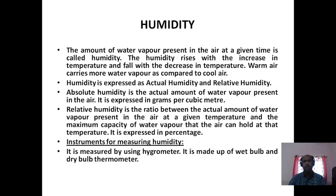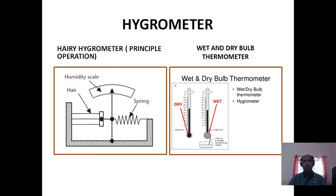Relative humidity is the ratio between the actual amount of water vapor present in the air at a given temperature and the maximum capacity of water vapor that the air can hold at that temperature. It is expressed as a percentage. There are two kinds of instruments used for measuring humidity: the hygrometer and the wet and dry bulb thermometer.